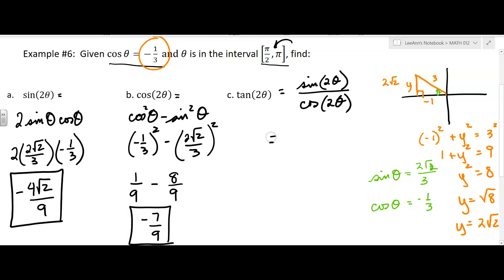And then for this last one, for tangent, I'm going to use the information I know. Sine: -4√2/9, all over cosine, which was -7/9. The 9's cancel, negative divided by negative is positive, and so I'm going to get 4√2/7. And that's the answer.